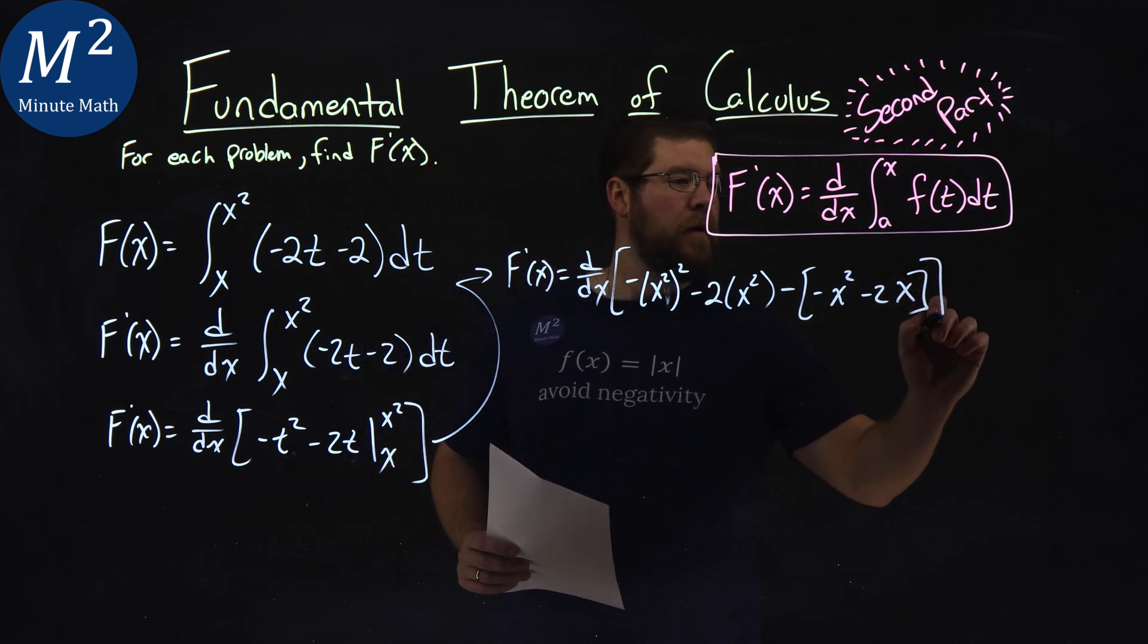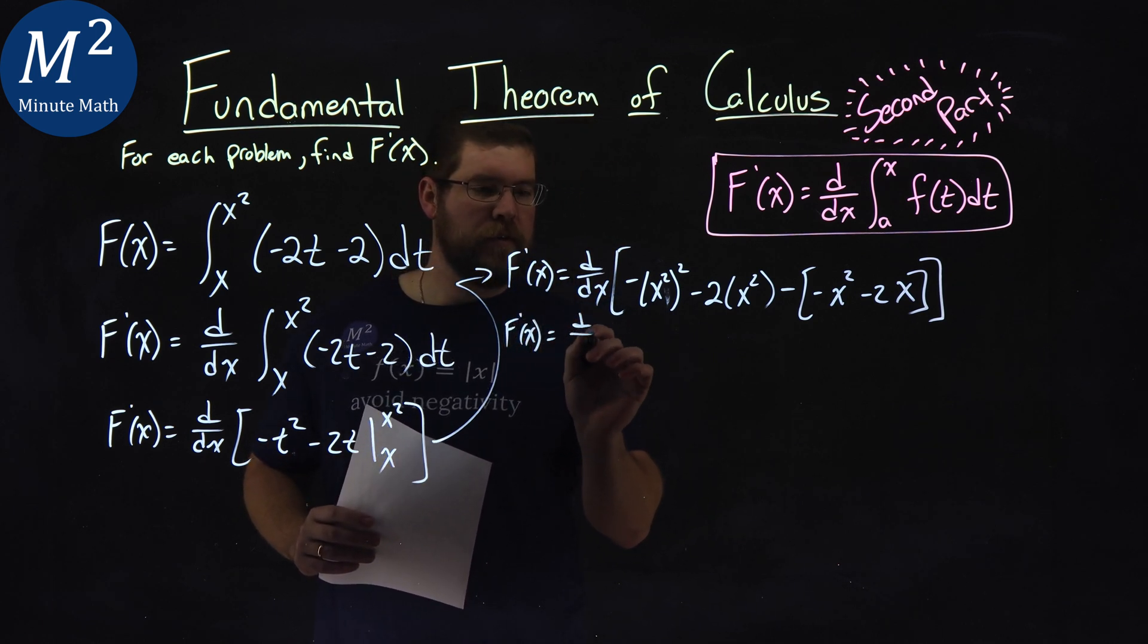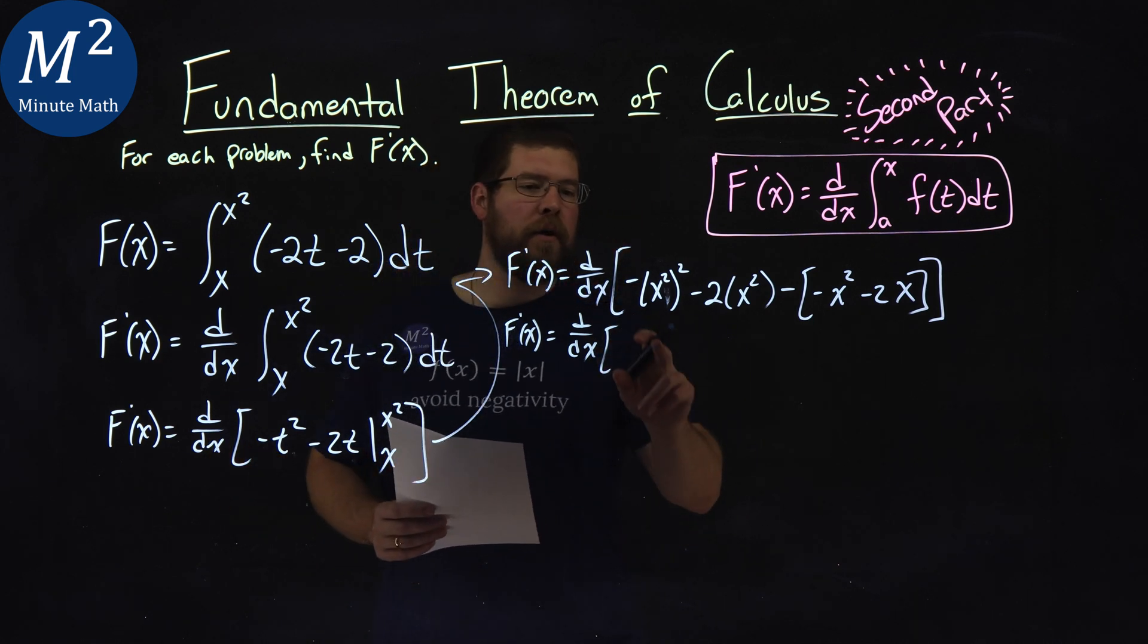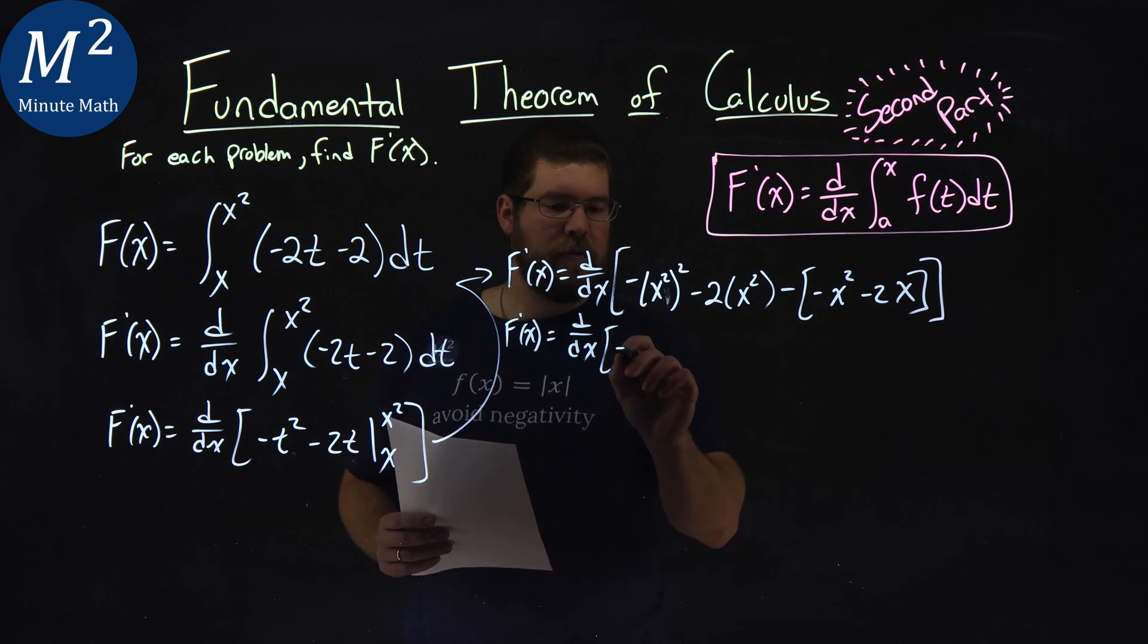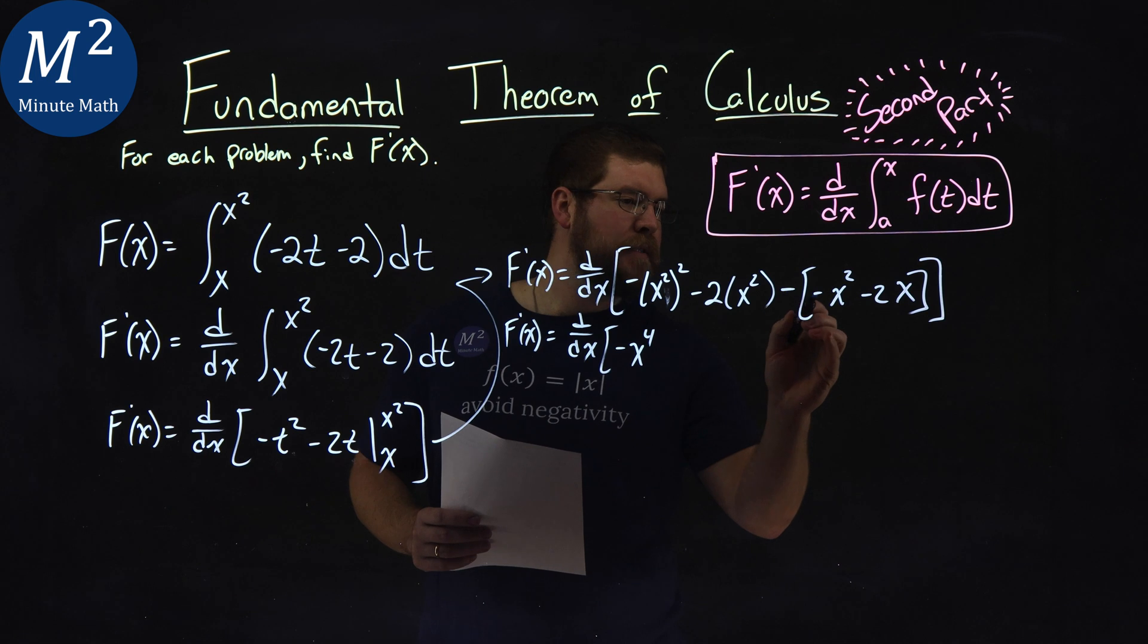So now let's simplify this out. f prime of x equals d/dx. This becomes negative x squared squared is negative x to the fourth power. Now right here, we have a minus a negative,